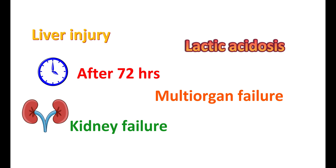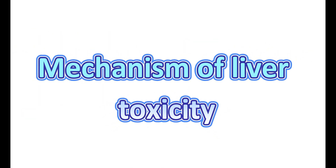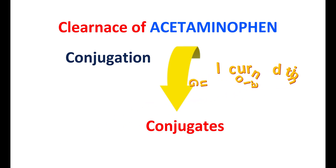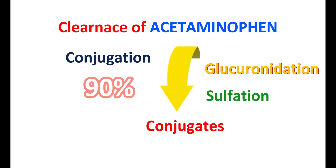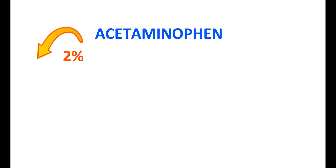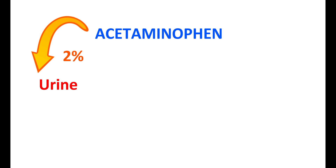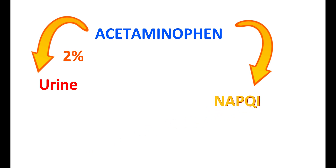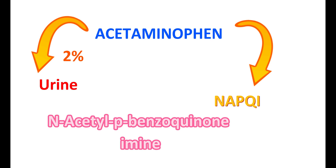It is essential to treat liver toxicity produced by acetaminophen as early as possible. The main route of clearance of acetaminophen from the body is through conjugation — converted into conjugates by two processes: glucuronidation and sulfonation. About 90% of administered acetaminophen undergoes conjugation and is excreted in the urine, while a small amount is excreted directly unchanged. Another route is metabolism by the cytochrome P450 system, where acetaminophen is converted into the metabolite NAPQI (N-acetyl-para-benzoquinone imine) by CYP2E1. Less than 10% of acetaminophen is converted into this metabolite.